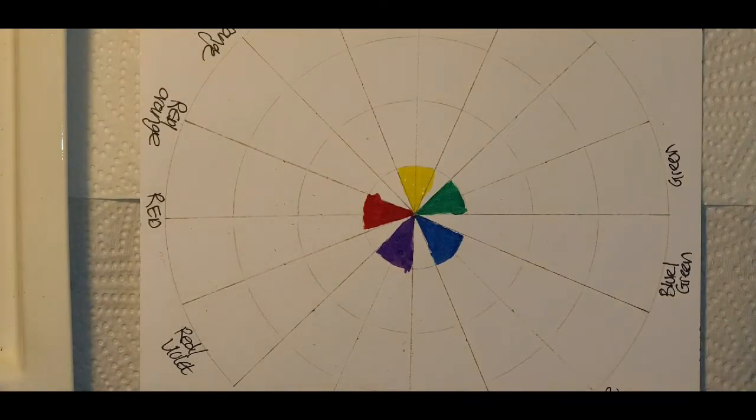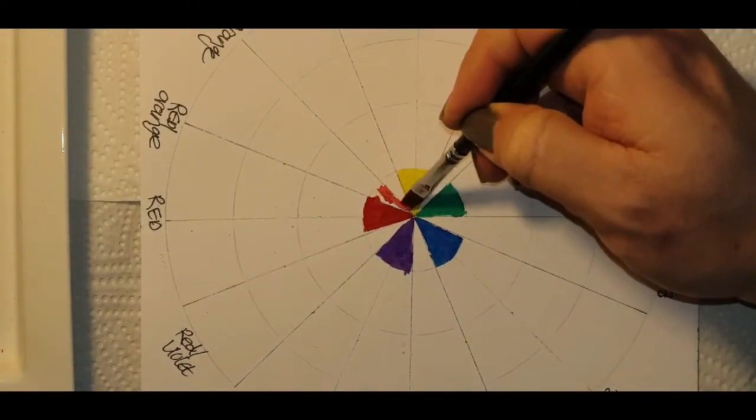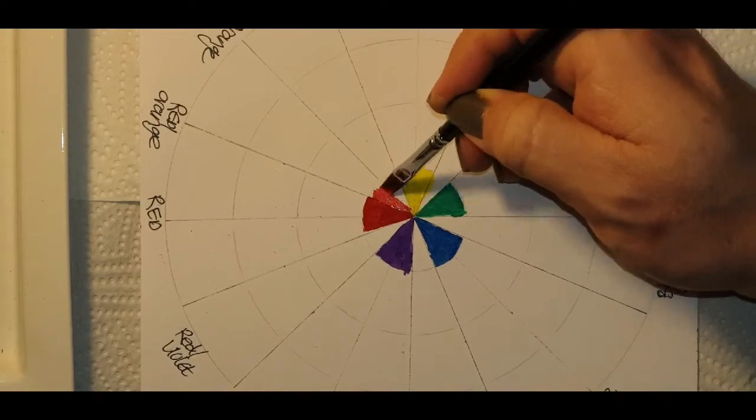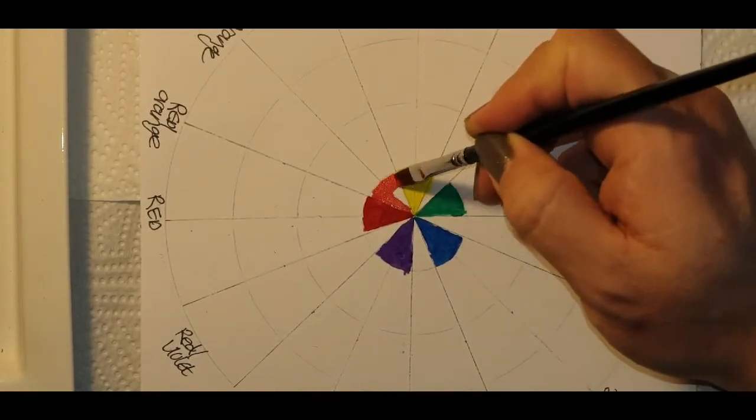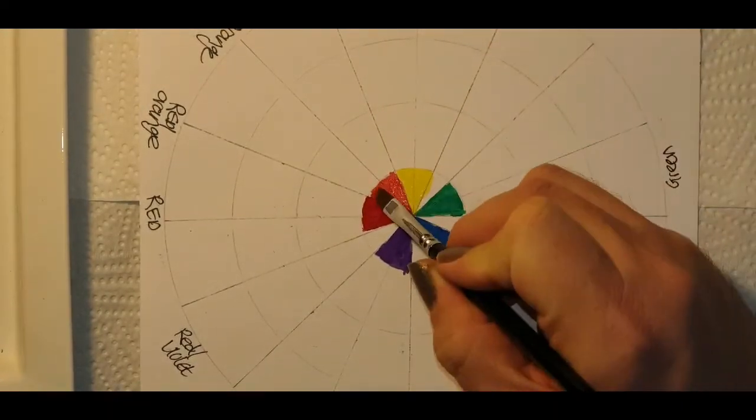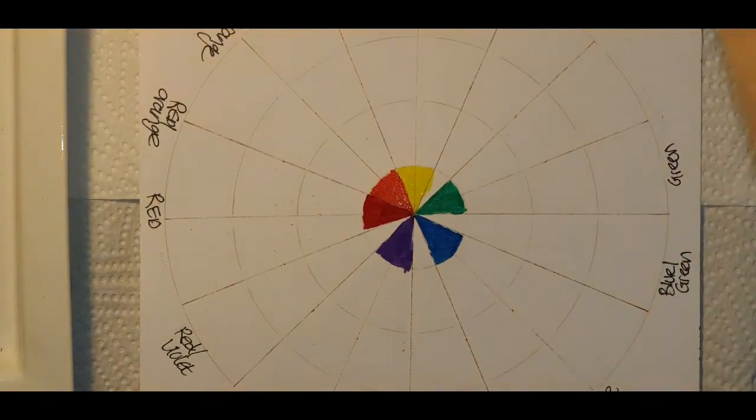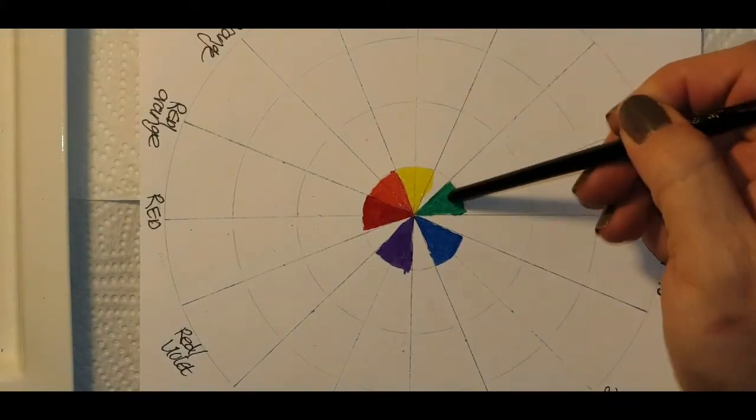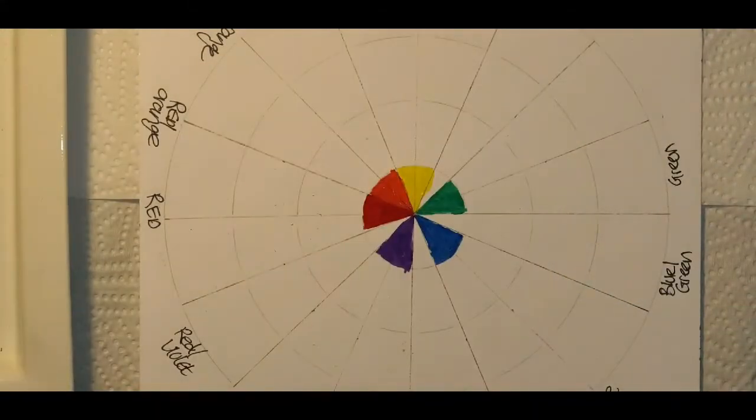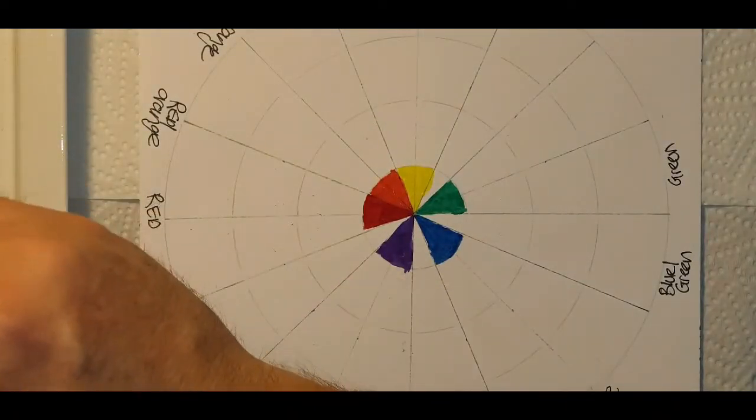And then lastly, yellow and red combined gives you orange. I notice that my color wheel isn't perfectly symmetrical and I've got more space on one side than on the other. Math is definitely not my strong point, but that's not essential because we are just going to play in the color wheel. It's not about how perfect it is.